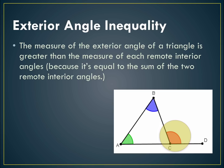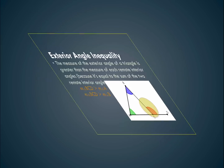We know that the exterior angle is the sum of the two remote interior angles, which means, of course, that the exterior angle would have to be greater than each of those two remote interior angles.